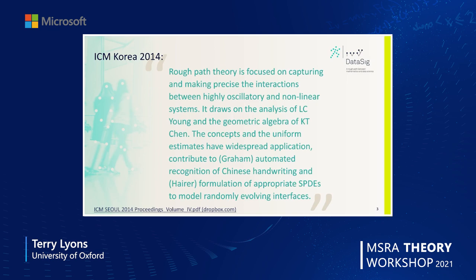Rough path theory develops certain concepts going back to the 1950s and in some places the 1930s — to geometry and analysis — and pulls those together to get a theory that works. In it, we introduced some new tools and new language for describing the evolution of systems.